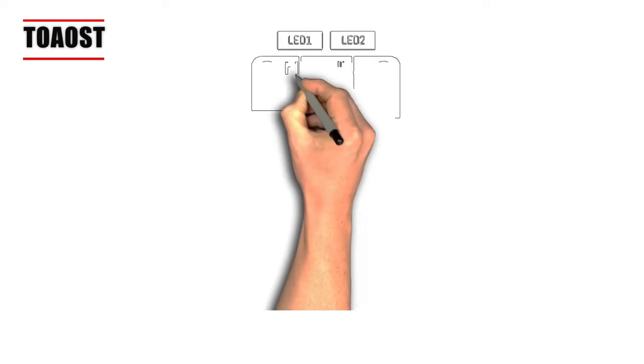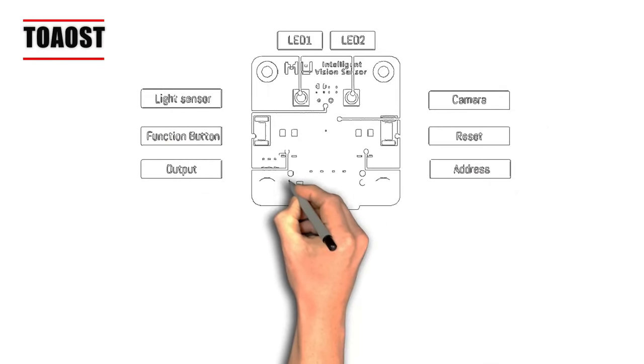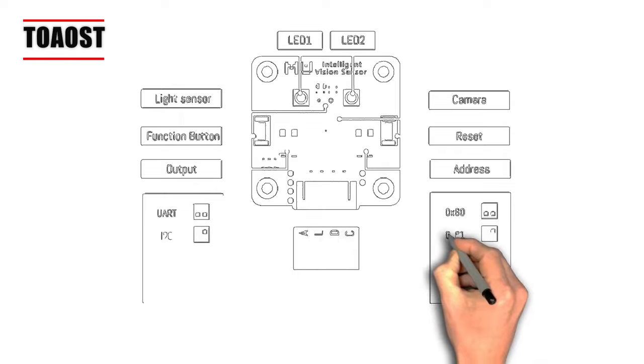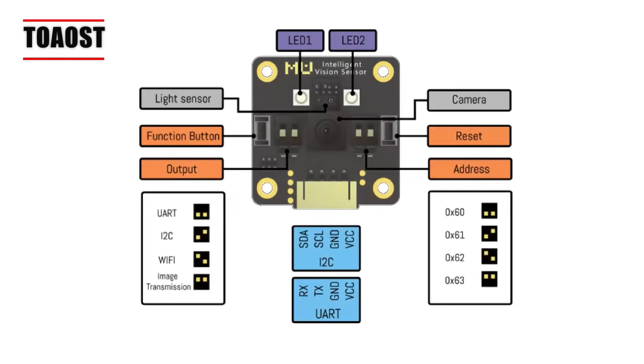The output can be obtained from UART and I2C. In this sensor, there are four kinds of communication modes: UART mode, I2C mode, Wi-Fi, and image transmission mode. Here we are working on the I2C and UART mode.